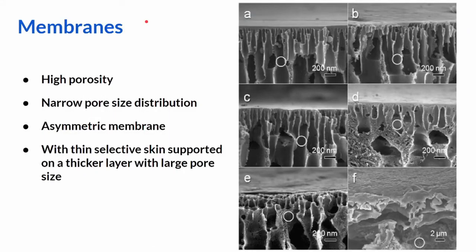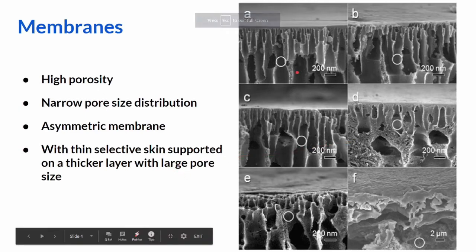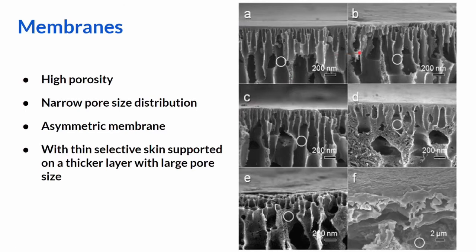As we have seen, ultrafiltration is basically a membrane filtration phenomena. The nature and quality of membrane would play a pivotal role in it. The membranes should have high porosity, narrow pore size distribution, and generally we tend to prefer asymmetric membranes with thin selective skin supported on a thicker layer with large pore size. The image on the right is actually a cross sectional view of ultrafiltration membrane taken from a research paper by Yazoo et al. Here you can see the pores and the partitions of the membrane that are generally used for ultrafiltration.